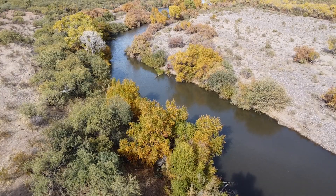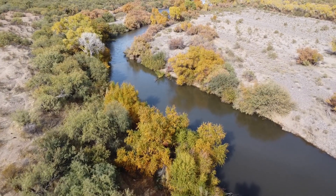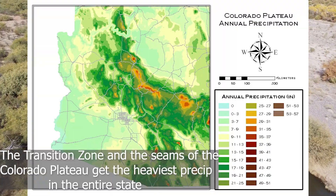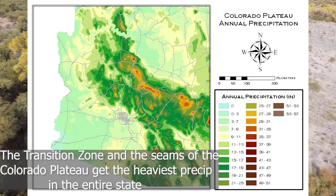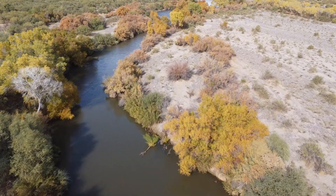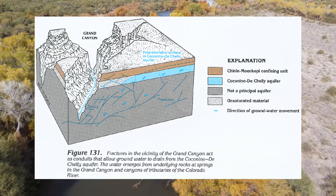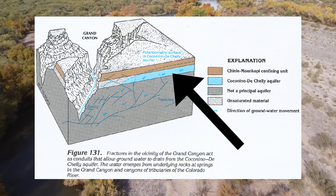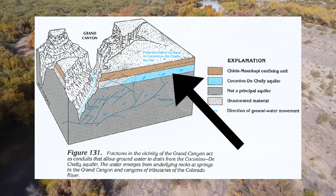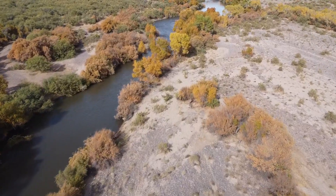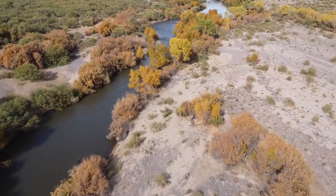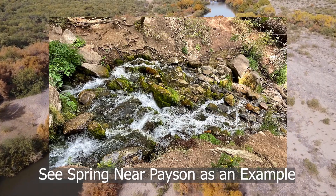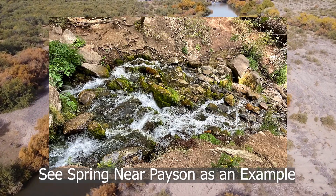The Colorado Plateau on average receives a lot more rain and snowfall than other parts of Arizona. It also has great aquifer rock, which is groundwater-bearing rock, which makes the seams of the plateau an extremely bountiful area for natural springs where groundwater is pushed out to the surface.